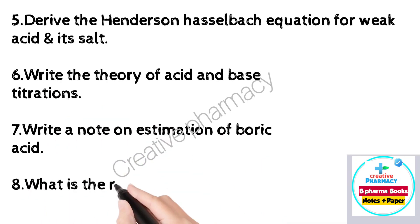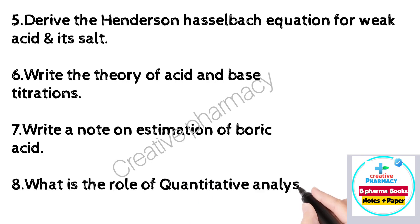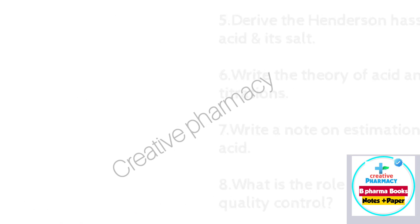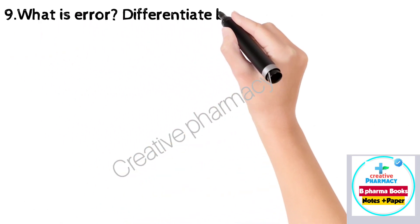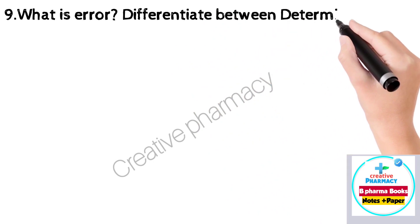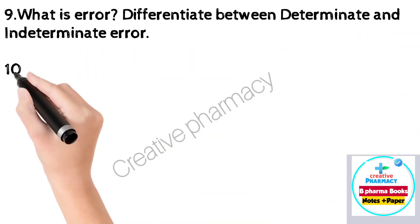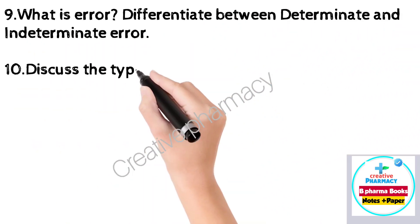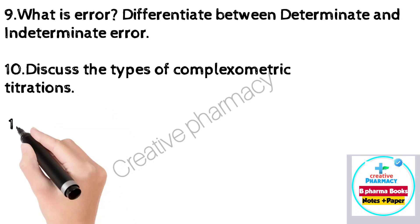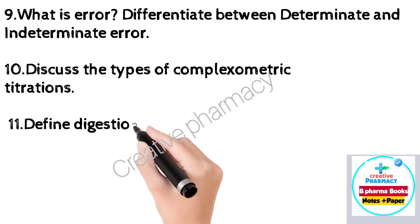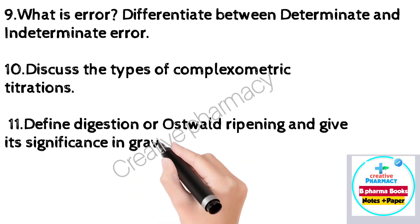Question 8: What is the role of quantitative analysis in quality control? Question 9: What is error? Differentiate between determinate and indeterminate error. Question 10: Discuss the types of complexometric titrations. Question 10: Define digestion or Ostwald ripening and give its significance in gravimetric analysis.